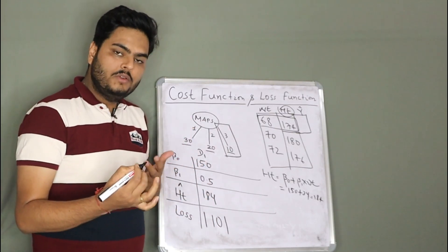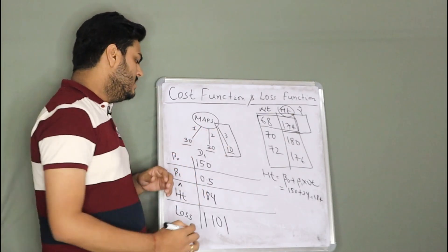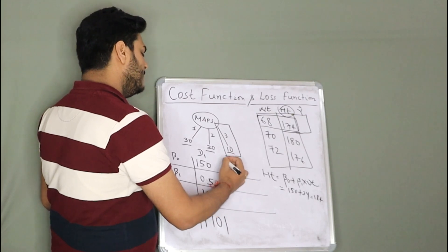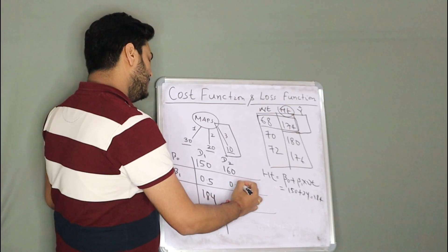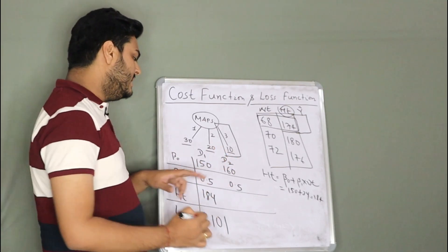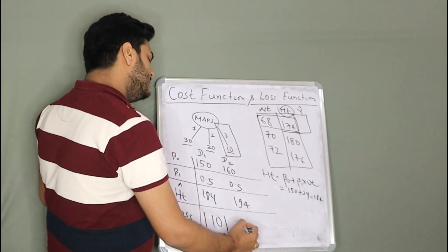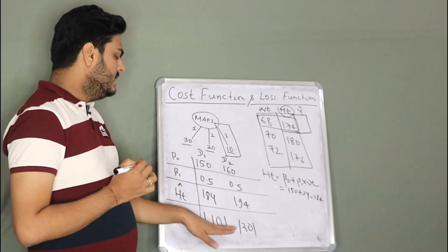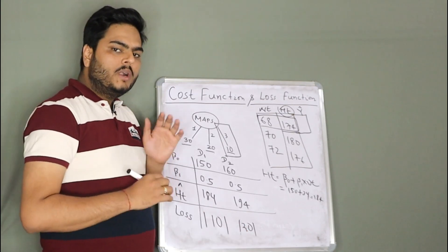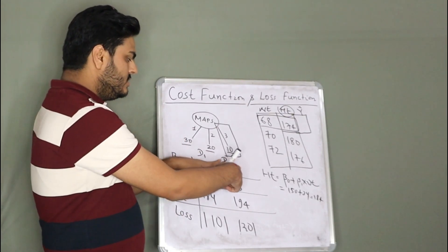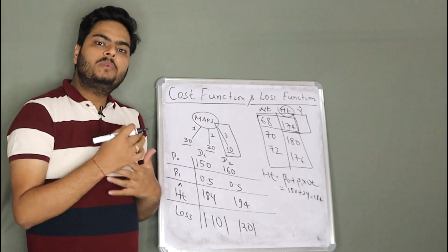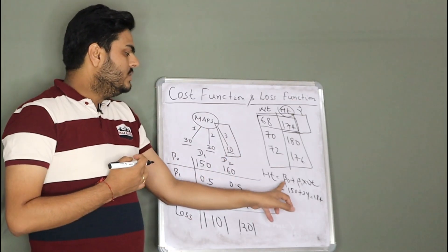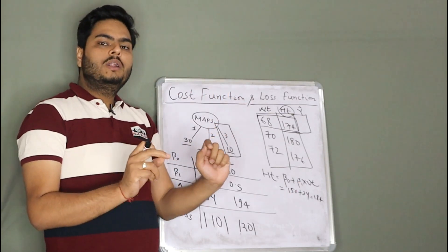If I change my decision to D2: beta_0 = 160, beta_1 = 0.5, the predicted value increases by 10 to 194. In this case, the loss becomes |194 − 174| = 20. So decision 1 and decision 2 give different losses. We want to know what is the optimal value of beta_0 and beta_1 for which we will have the lowest loss.